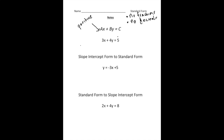Right here is an example of an equation written in standard form: three x plus four y equals five. In this case the A value is three, the B value is four, and the C value is five. Notice there are no fractions or decimals at all inside the equation.